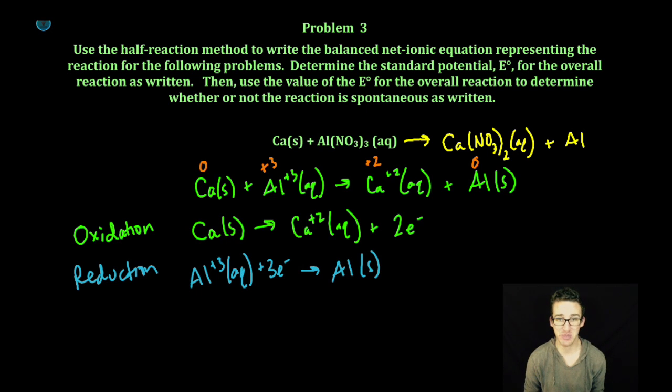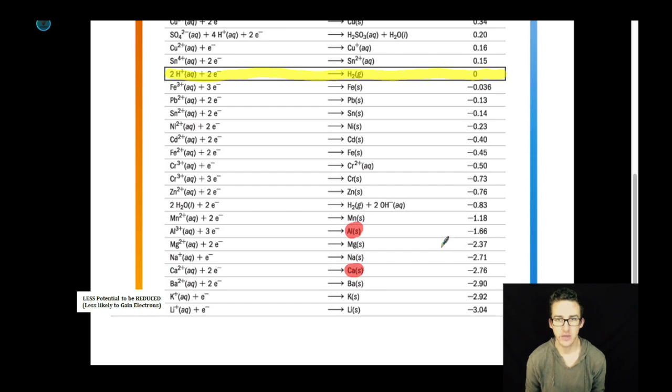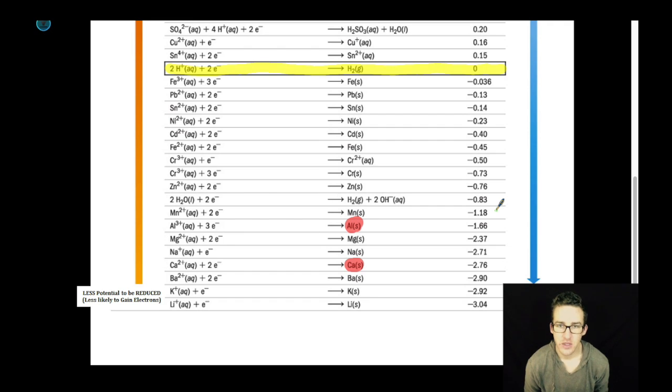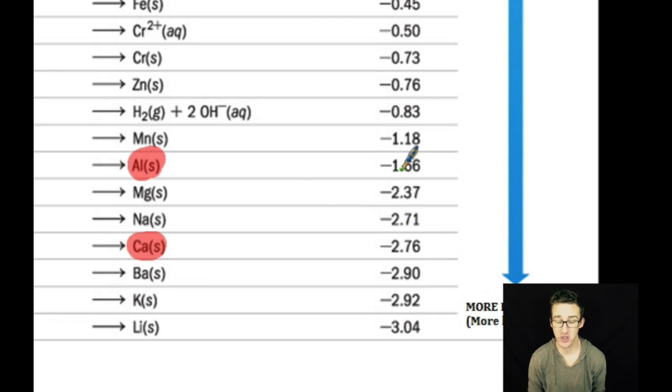Okay, we're going to jump over to the reduction potential chart to see what the potentials are for these oxidation and reduction half reactions. The reduction potential for calcium is negative 2.76 volts, so not very likely to be reduced. And in fact, it is being oxidized in the reaction that we are working with, so I'm going to flip its cell potential to positive 2.76 volts.